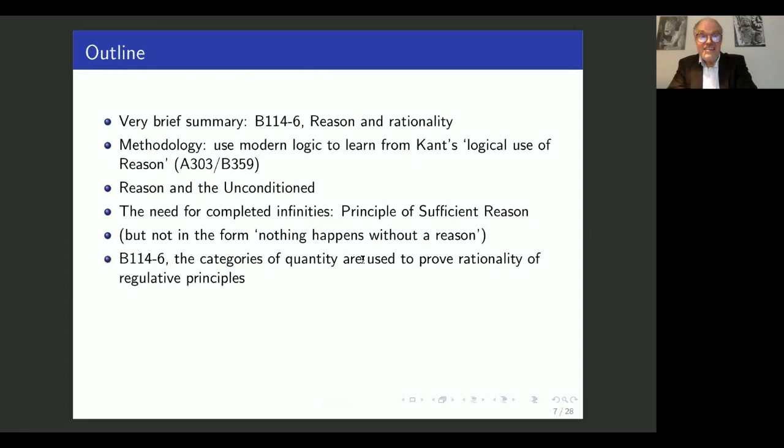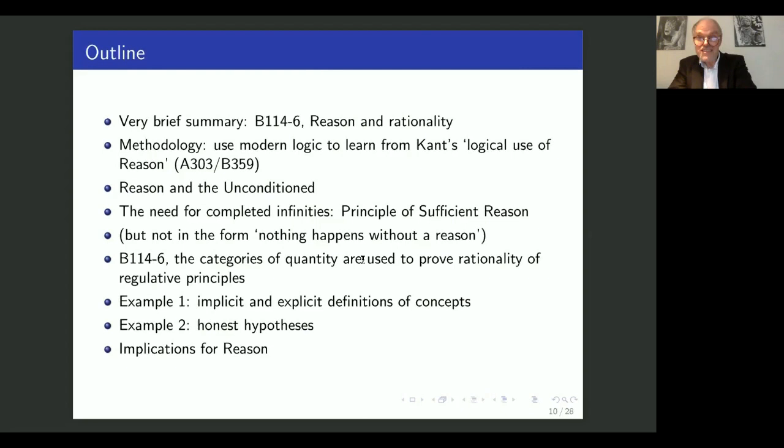Then we come to the paragraph 12 of the transcendental deduction B, where, so I will argue, the categories of quantity are used to prove the rationality of regulative principles of reason. And we'll give two examples having to do with philosophy of science. Example one is implicit and explicit definitions of concepts. Example two has to do with what you could call honest hypotheses, namely what Kant calls hypotheses without support from auxiliary hypotheses. And we'll end finally with the implications for reason.